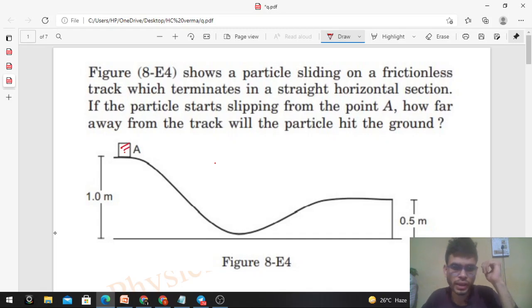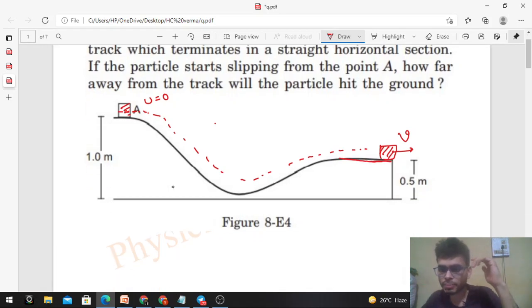So this is your particle and it starts slipping from point A. You can take the initial velocity of the particle to be 0. It will slide on this curved path and finally reach the end of this track. Then it will leave the track with some speed, let's say v. It will leave the track horizontally because this track is horizontal.